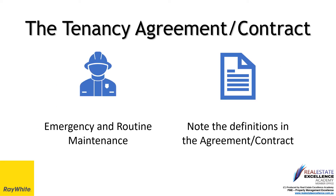The standard terms of the Tenancy Agreement Contract Form 18A set out the legal definition of what is emergency maintenance and what is routine maintenance. Please note the definitions in the agreement. Everything is legally required to be in writing; however, if you have an emergency repair situation as per the definition, please phone our agency, refer to the agreement for emergency after-hours contact details and procedures, and confirm in writing at a later date.